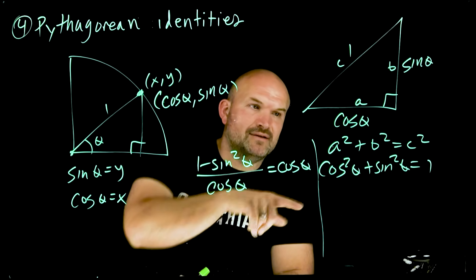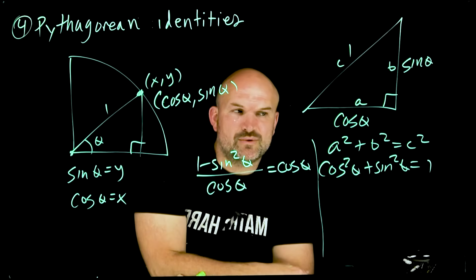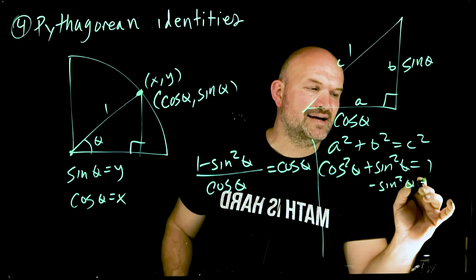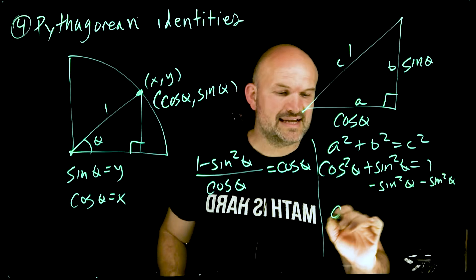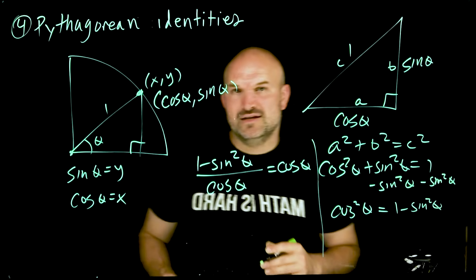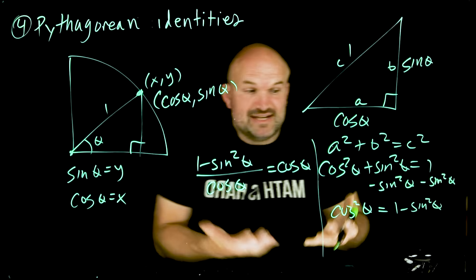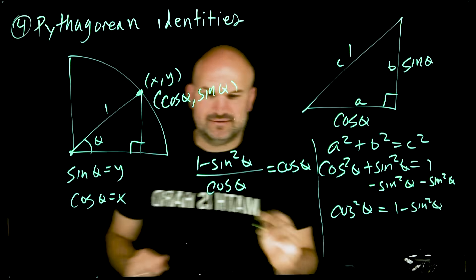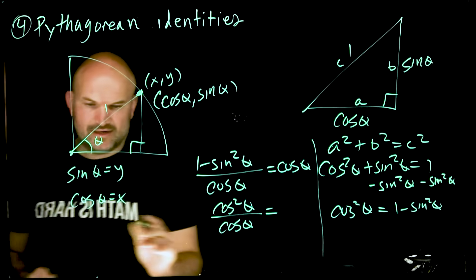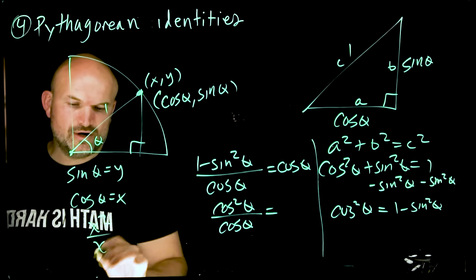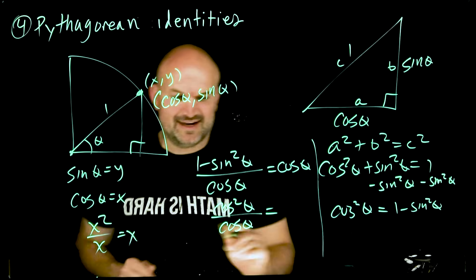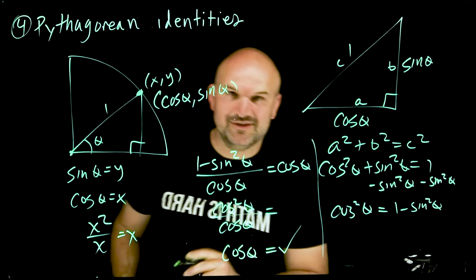Here's an example of using the Pythagorean identity. We have 1 minus sine squared of theta. If we take cosine squared θ + sine squared θ = 1 and subtract sine squared θ from both sides, we get cosine squared θ equals 1 minus sine squared θ. So cosine squared θ over cosine θ simplifies just like x squared over x equals x — giving us cosine of theta.